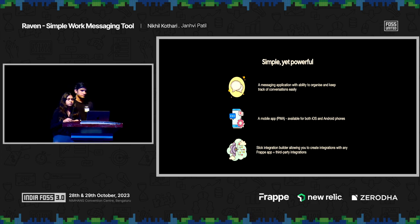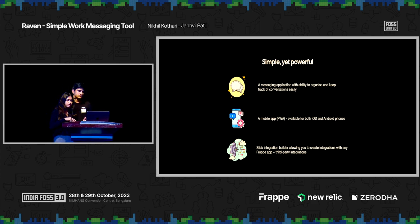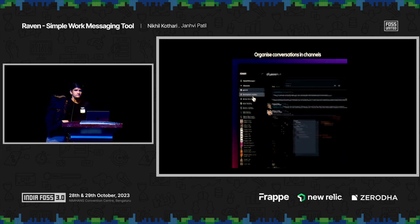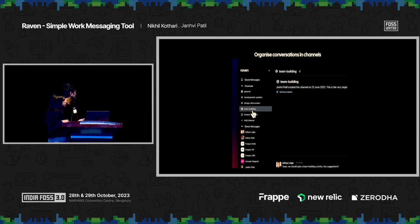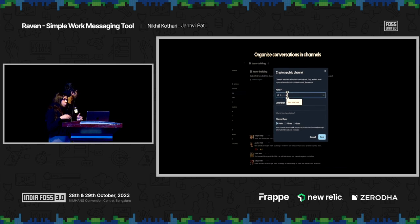Raven is simple yet powerful. What we have is a web application, a mobile app which is a PWA that works on both iOS and Android, and an integration builder we're still working on that lets users build integrations right from the GUI. You can organize conversations into channels — public channels, private channels, and open channels. Open channels are basically broadcast channels where all members are users by default.